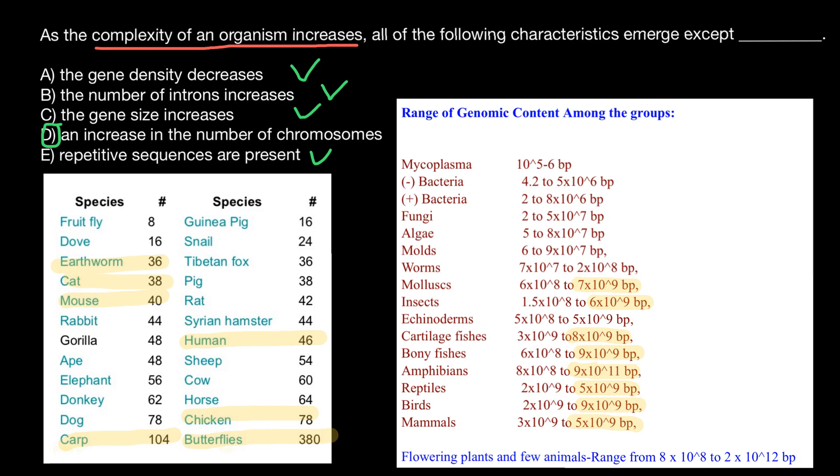This is what we call the C-value paradox. Some plants may have genomes 500 times bigger than humans. Can you imagine that? Again, genome size and number of chromosomes don't increase with increase in organism complexity.